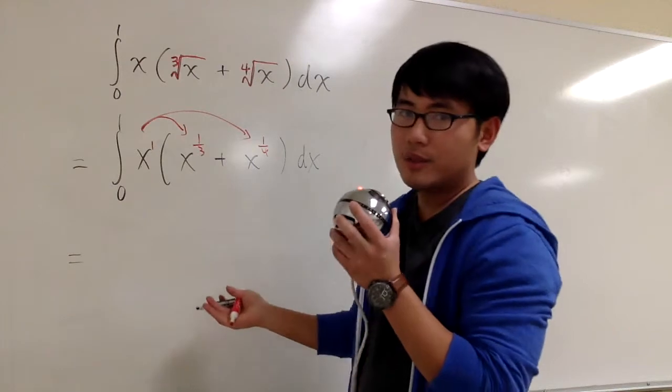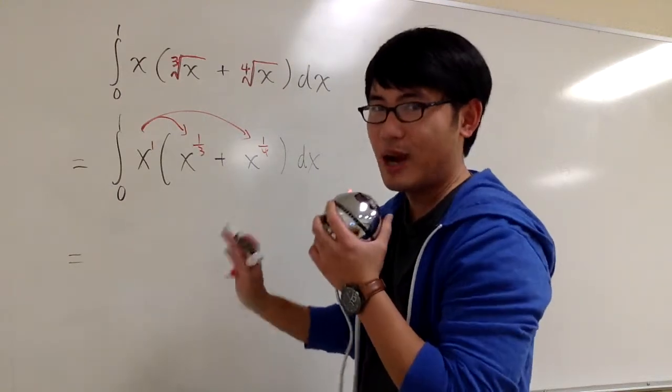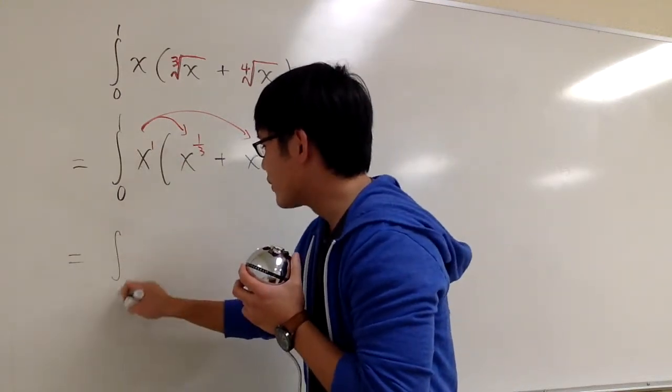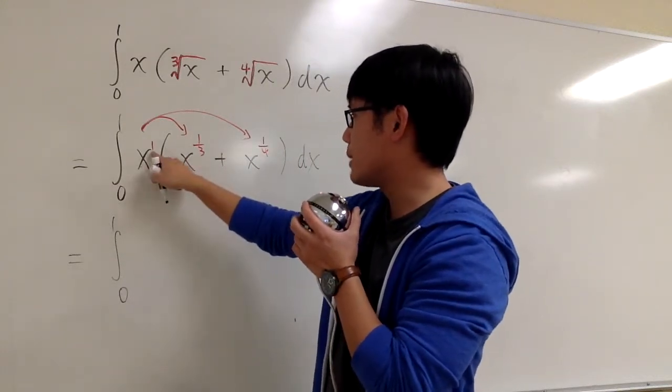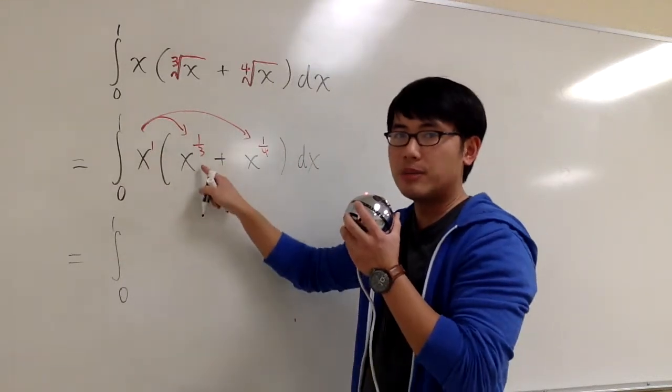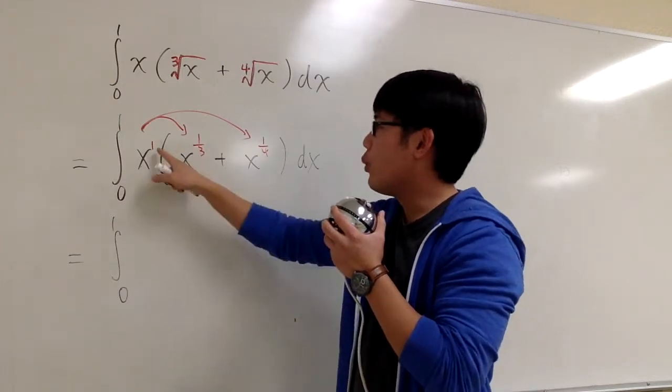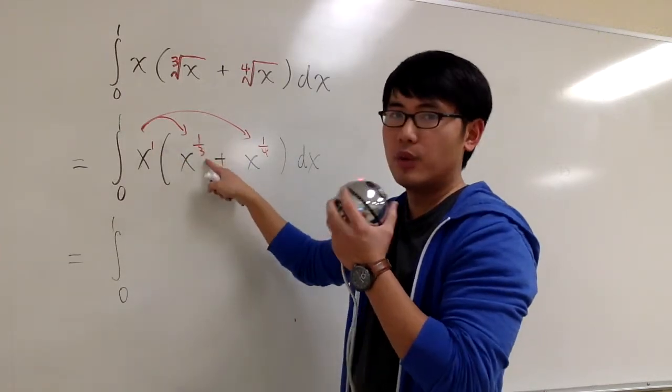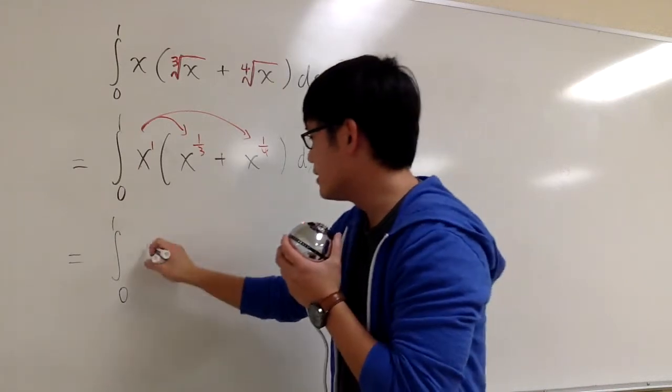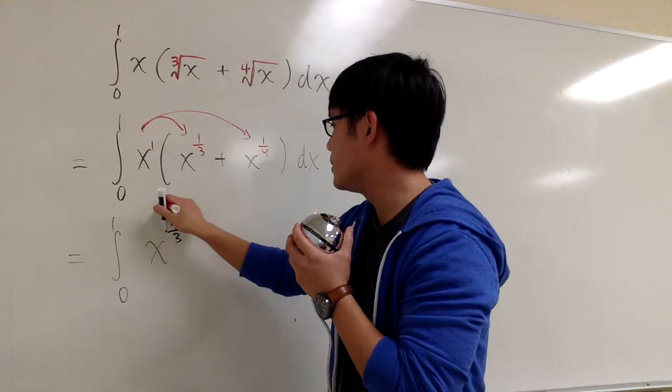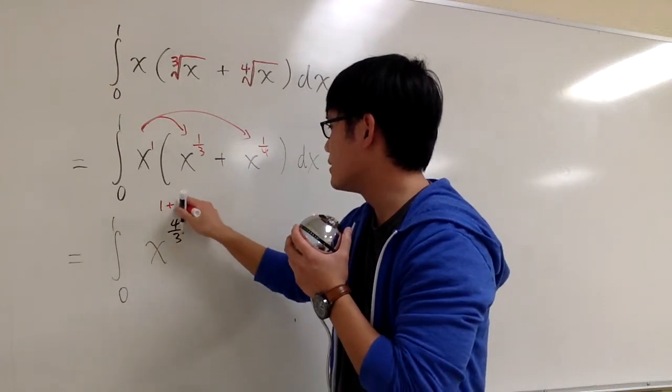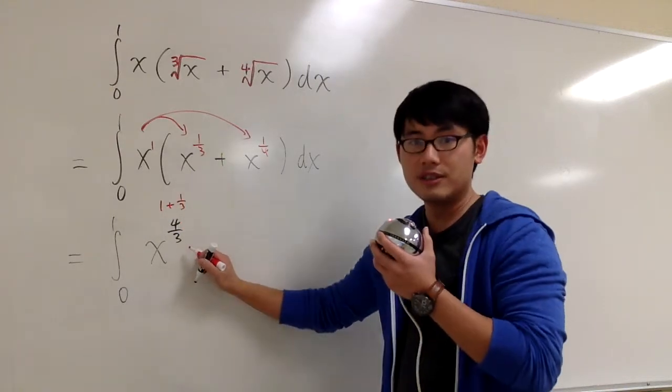We still haven't done anything with the integral yet. Just the algebra for now. So this is from 0 to 1. x to the first power times x to the 1 third power, we are going to add the exponents. 1 plus 1 third will give you 4 thirds. So this is x to the 4 thirds. Once again, this is because 1 plus 1 third. That's how we get 4 thirds.